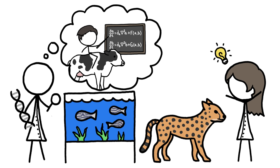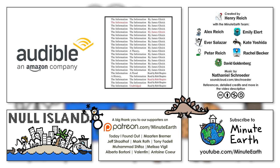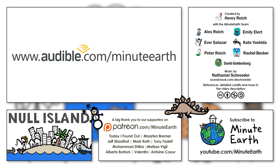This video is supported by Audible, where you can find the largest selection of audiobooks available anywhere, including The Information, an awesome book by science writer James Gleick that explores how luminaries like Alan Turing have helped us figure out what information even is, and how we can go about creating, transmitting, and storing it. To download the information or another audiobook of your choice and show your support for MinuteEarth, go to www.audible.com slash MinuteEarth.